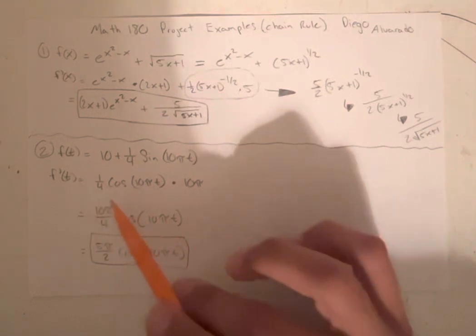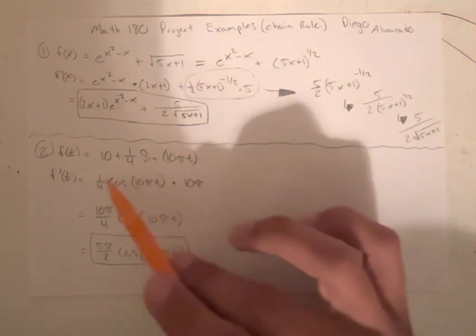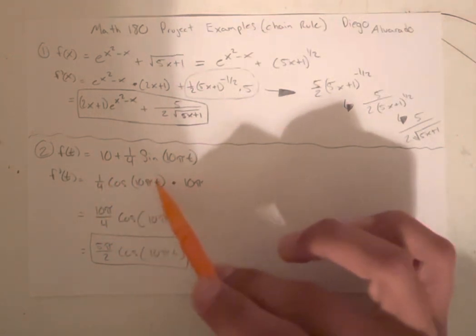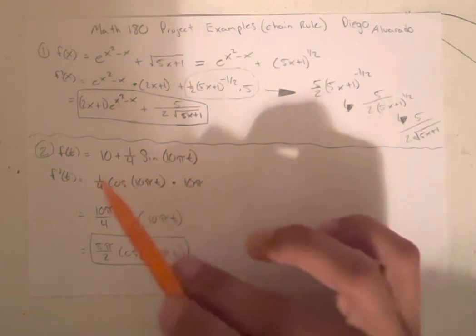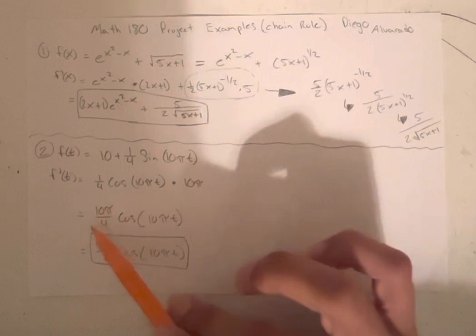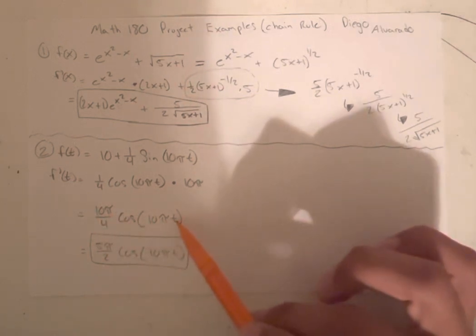So you would get this. 1 4th cosine 10 pi t times the derivative of the inside, which is times 10 pi. You can combine this 10 pi with the 1 4th and get 10 pi over 4 cosine 10 pi t.